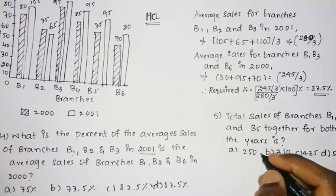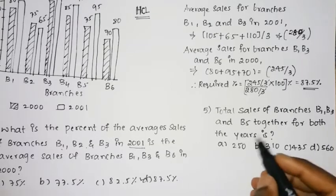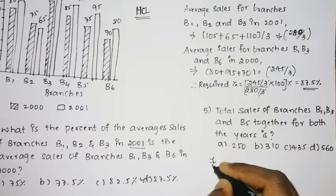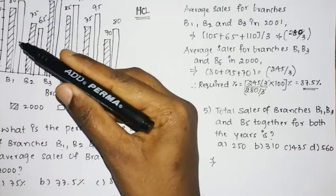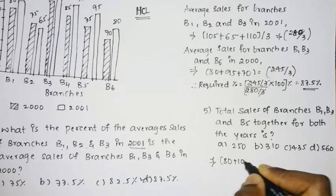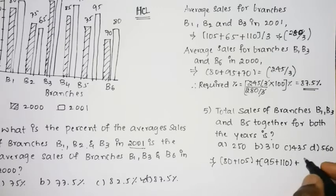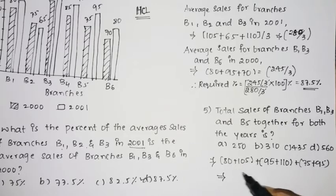Now the last question: the total sales of branches B1, B3, and B5 together for both years. For B1, the values for both years are 80 and 105. For B3, it is 95 and 110. For B5, it is 75 and 95. We need to add all these values together to find the total.